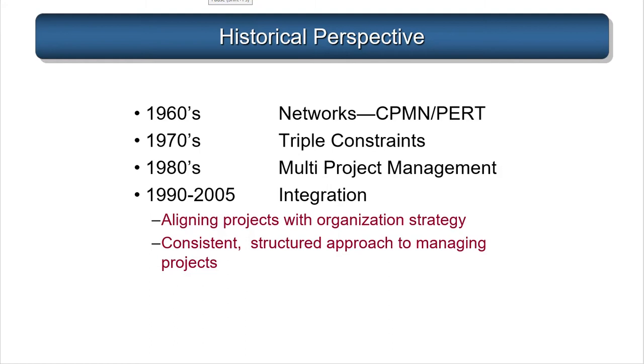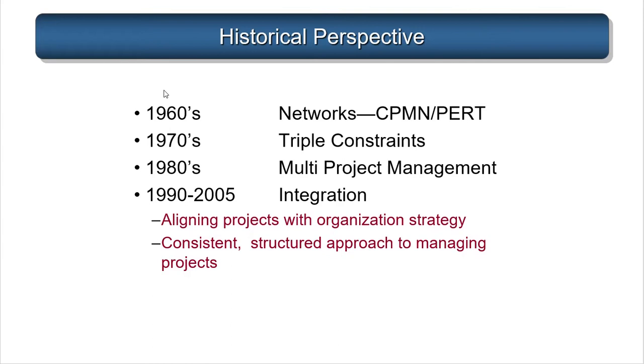Let's take a historical perspective of project management. Looking back about 75 years, we see some origins of project management in complex Department of Defense projects. This includes CPM — the critical path method — and PERT, the program evaluation and review technique. Networks are tools for organizing activities to determine overall project schedule duration. CPM and PERT are similar, except PERT assumes activity durations always vary naturally. This distinction began in the 1960s.